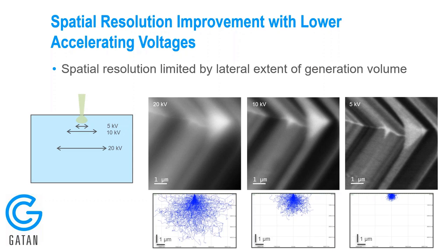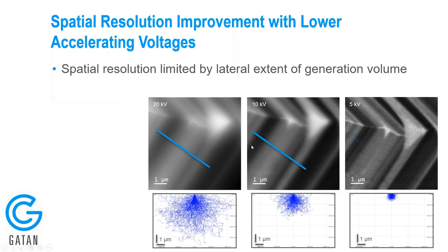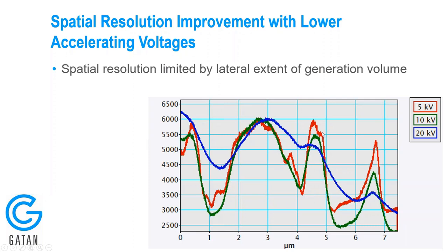What this tells us is that the generation volume used to scan across the sample surface is limiting our resolution. The smaller we make the generation volume, the higher we can push our resolution. By taking an intensity profile across the edge at different voltages, the slope of the edge increases at lower voltage — we get closer to the generation volume no longer limiting image resolution.